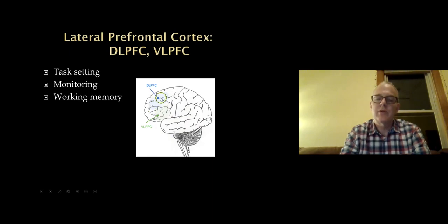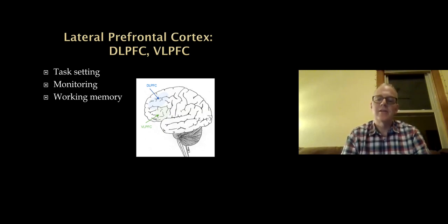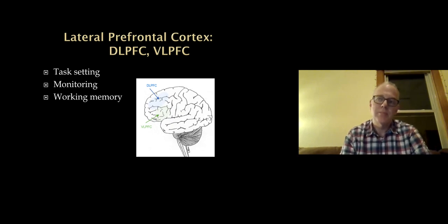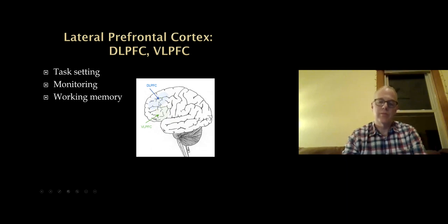The dorsal and ventral lateral prefrontal cortex is important for task setting, monitoring, and working memory — all things students need to be very good at. You come up with a task or a plan for how you're going to study, but then you need to monitor your progress. Working memory will be a subject in this lecture, and that is a function largely of the dorsolateral prefrontal cortex.